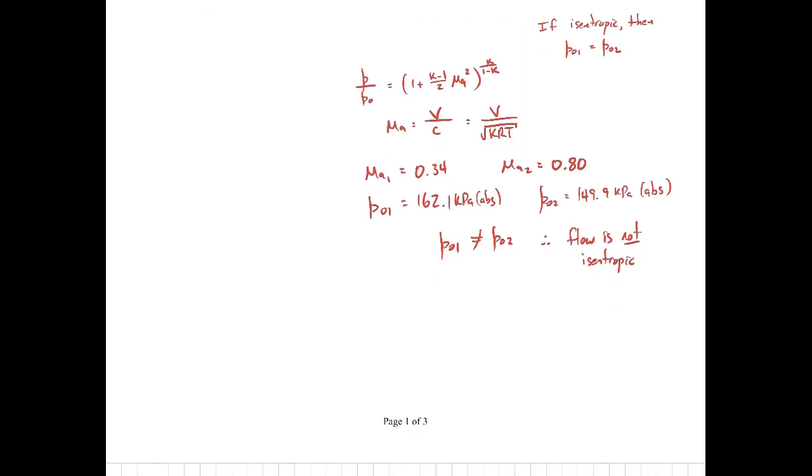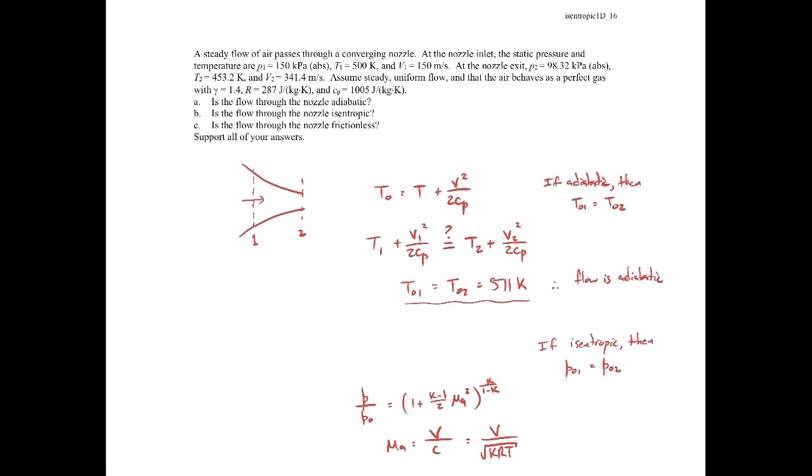Since the flow is adiabatic, there's no heat transfer into or out of our flow. Really the only source where we could change the entropy would be through frictional effects. We know it's not isentropic, so the entropy is changing and it's really just the friction that would cause the change or the viscous effects. We'll conclude then the flow must have significant viscous effects. I think that's all we were asked for this problem.